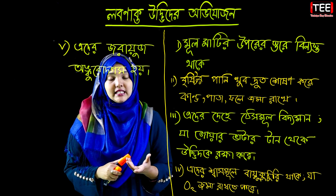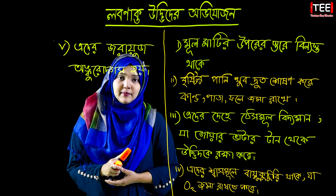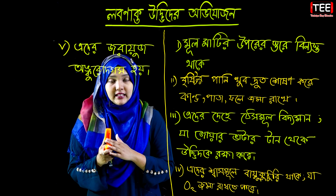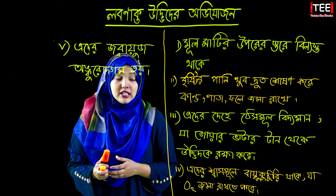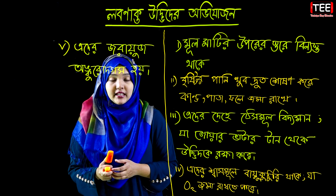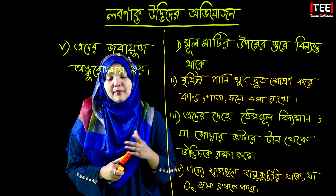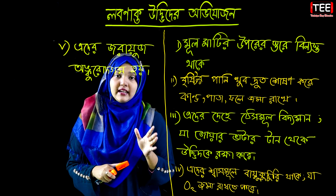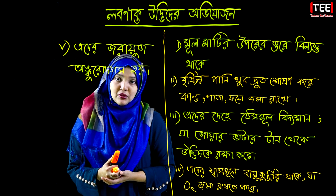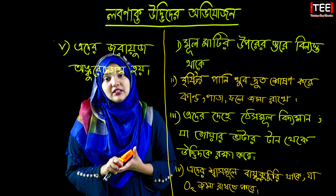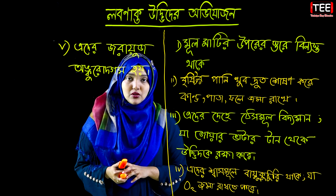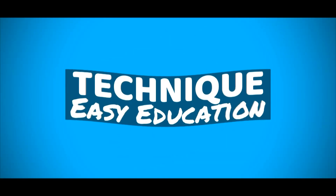গুলো দেখলাম এদের মূল হচ্ছে মাটি বেশি লবণাক্ত হলে বেশি পানি শোষণ করে না। বিস্তারের ব্যবহার করতে যোগানে শেষে দেখলাম এদের যারা অঙ্কুরোদগম হয়, যার কারণে এদের বিস্তারের প্রক্রিয়াটা একটা limit-এর মধ্যে — বাকিটা safe limit-এর মধ্যে হতে না হলে। যদি অঙ্কুরোদগম প্রক্রিয়া না হতো, তাহলে কেন এদের বিস্তারটা সহজে হতে পারতো না।